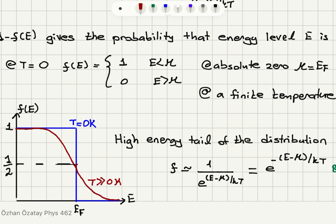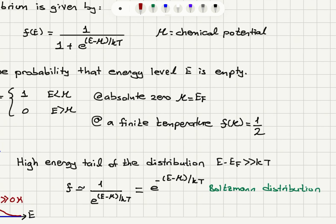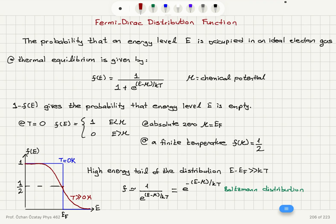A tail forms in the higher-energy portion of the distribution. When the energy level is much greater than the Fermi level — that is, when E − E_F is much greater than the thermal energy k_BT — the exponential term dominates over 1, giving 1 over e^((E−μ)/kT), which equals e^(−(E−μ)/kT). This is the Boltzmann distribution.